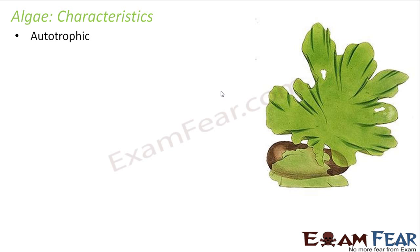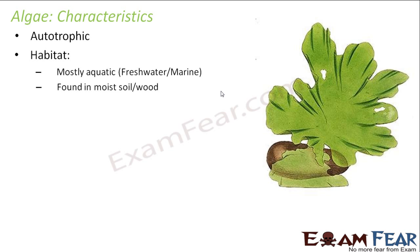They are autotrophic, a very important characteristic because they can prepare their own food with the help of chlorophyll. Because of the presence of the green colored pigment called chlorophyll, they are green in color. Talking about their habitat, where do they live? They are mostly aquatic, maybe fresh water or marine. They can be seen in lakes as well as in sea.